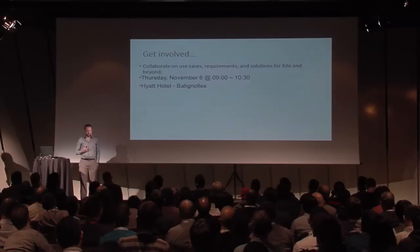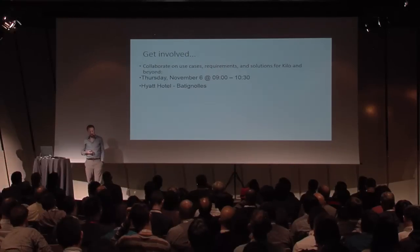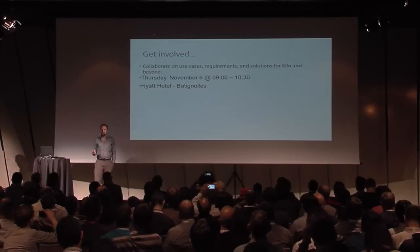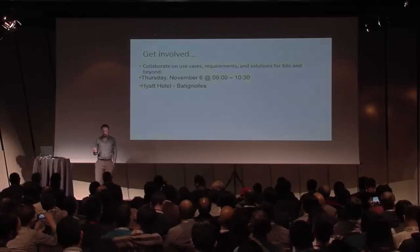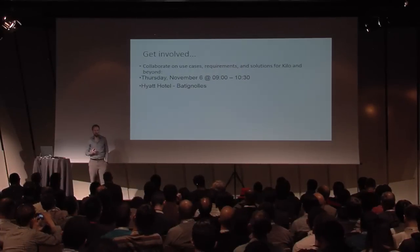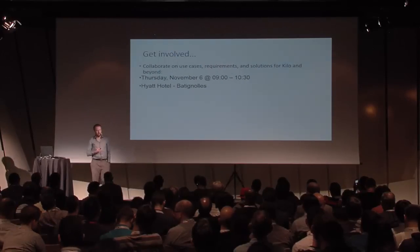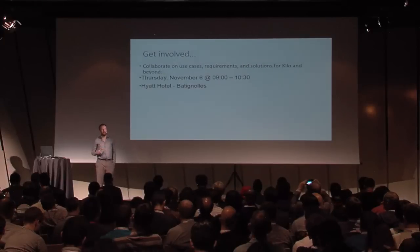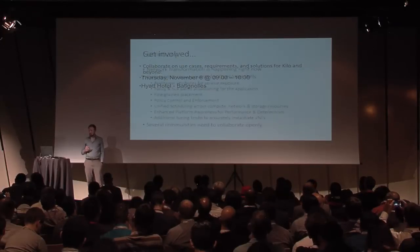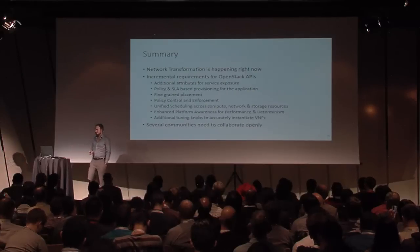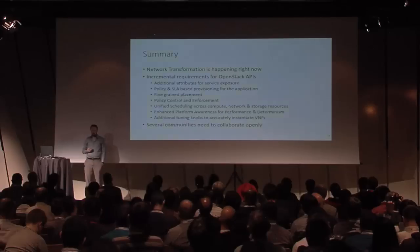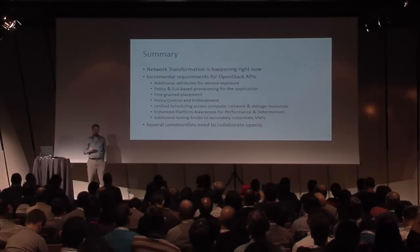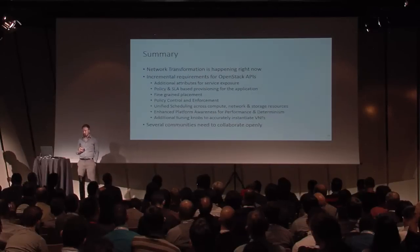To get involved, the NFV sub-team continues from the Juno cycle, with expressed interest from more providers. OPNFV is another effort being brought together. There is an operators summit session on Thursday morning at 9 o'clock at the Hyatt Hotel with an 80-minute slot to discuss progress, revisit how things went in Juno, and plan improvements for Kilo. In summary: network transformation is happening now. There are incremental requirements for OpenStack APIs — not a big bang, but things we can do in each cycle by working together.